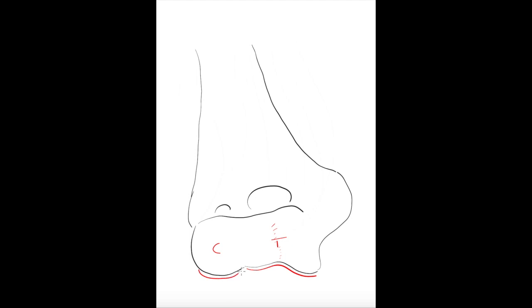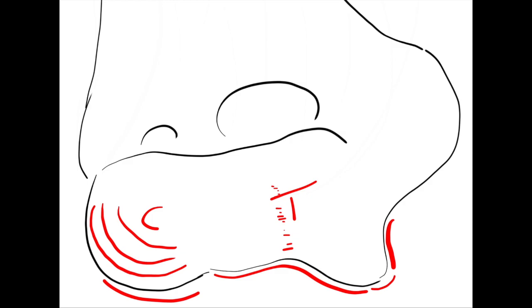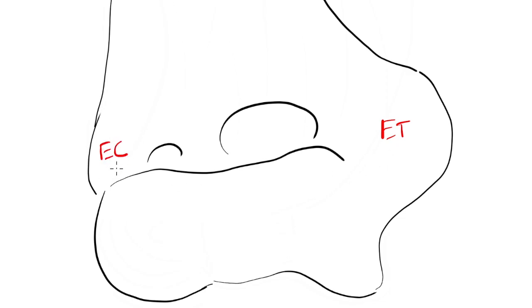The capitulum is lateral to the trochlea. Clinically, it is frequently referred to as the condyle, which is how I will call it from now on. It is a convex surface that articulates with the articular fovea of the head of the radius. The trochlea and the condyle are separated by a discrete groove. In a lateral view, we can see that the articular portion curves anteriorly and is anterior to the midline of the shaft. In the extra-articular region, we can see the epitrochlea, the epicondyle, and the medial and lateral supracondylar crests.